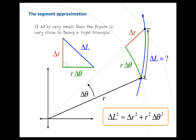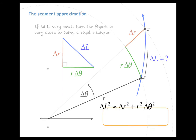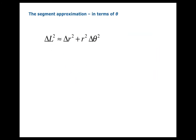Of course, that only gives us an approximation, but if delta theta is small, it's a pretty good approximation. So delta L squared is approximately equal to delta R squared plus R squared delta theta squared. We're going to carry this over, and remember we want everything in terms of theta. It's not quite clear what delta R is in terms of theta, so we're going to need to work on that a little bit.